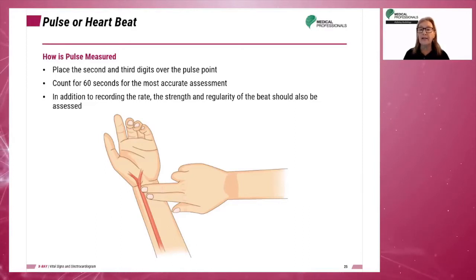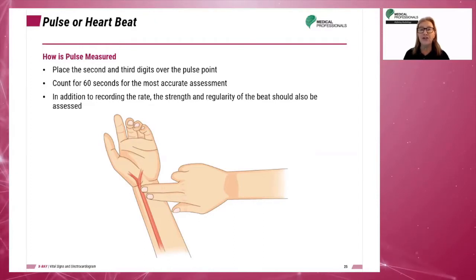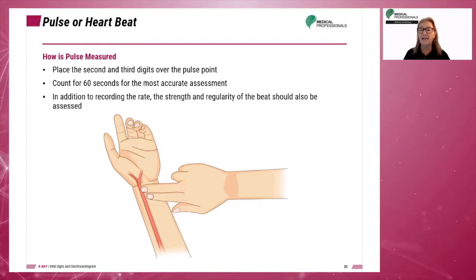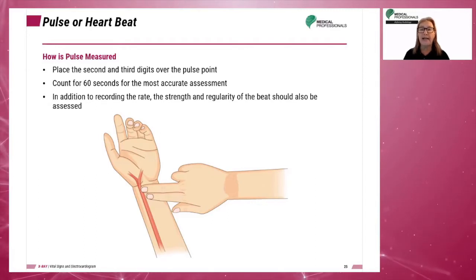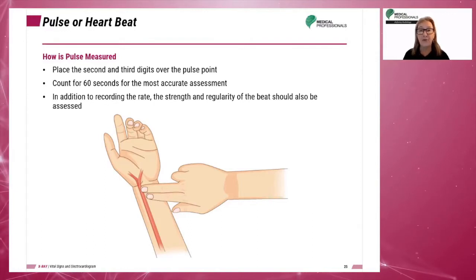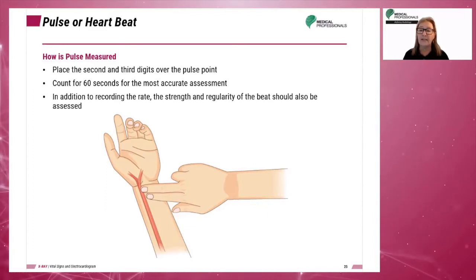In addition to recording the rate, the strength and regularity of the beat should also be assessed. If any abnormal condition exists, the pulse must be measured for 60 seconds. The resting pulse in adults is 60 to 100 beats per minute. For infants, the rate is 100 to 180 beats per minute. For children, the rate is 70 to 120 beats per minute with an average of 95 to 110. For an athlete, the rate is 45 to 60 beats per minute.